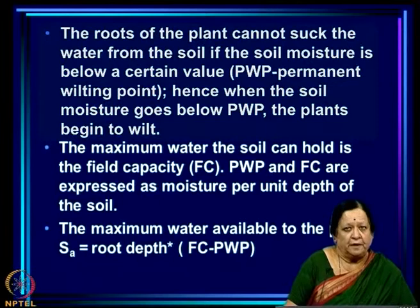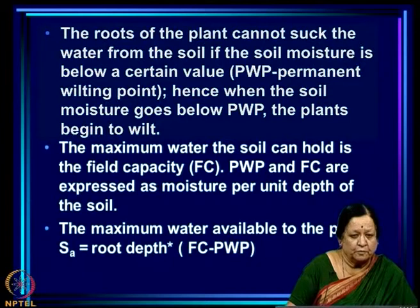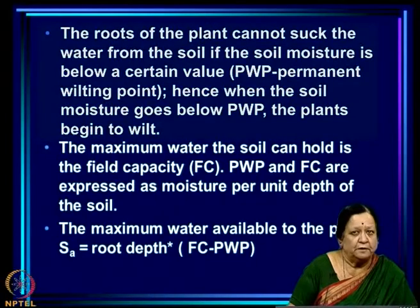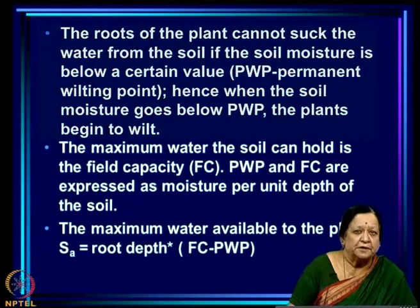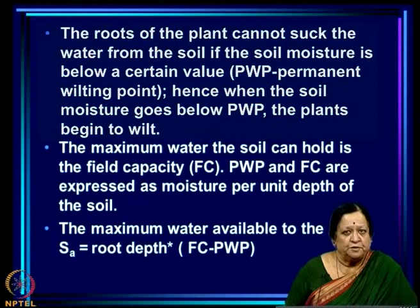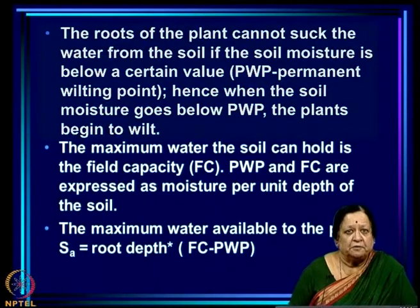The roots of the plant cannot extract water from the soil if the soil moisture is below a certain value — the permanent wilting point (PWP). When soil moisture falls below this critical value, the plant cannot get moisture from the soil and will begin to wilt.